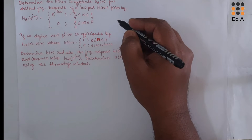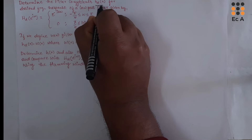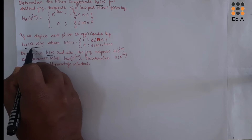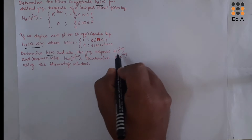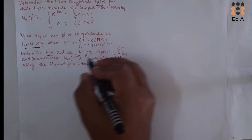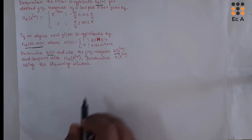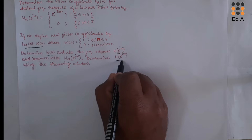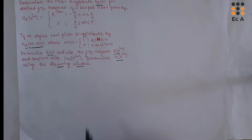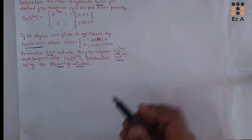There are different steps which we need to follow. The first step is to find HD of N, then find H of N as HD of N into omega of N. We also need to find H of e^jω and compare it with HD of e^jω, and then find H of e^jω using the Hamming window.